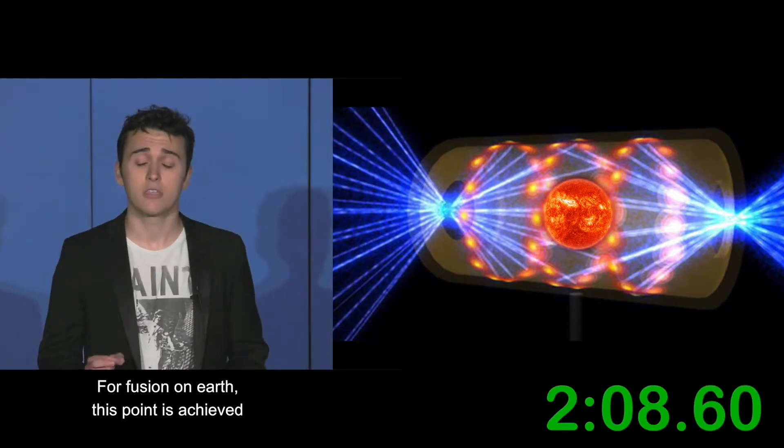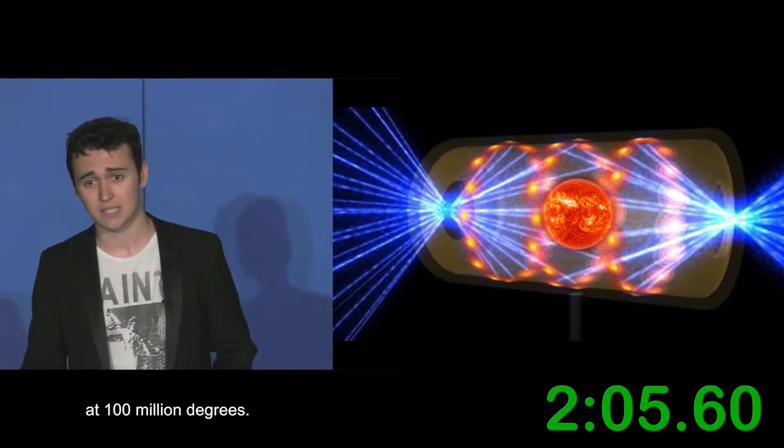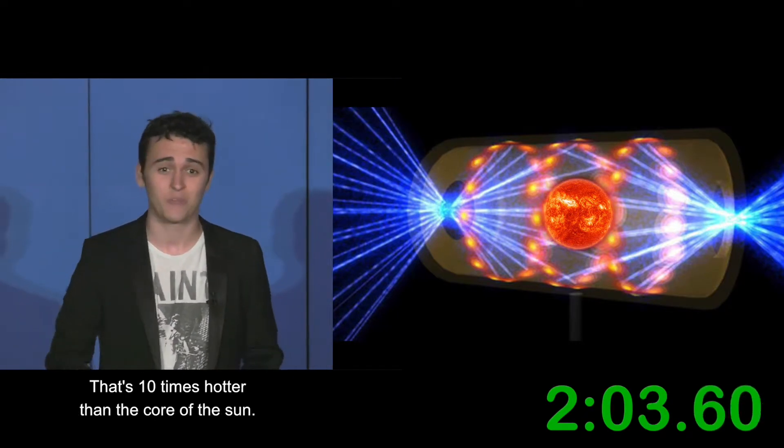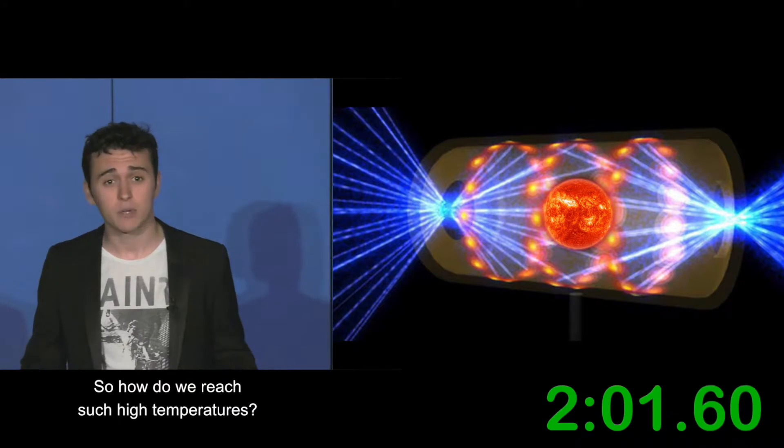For fusion on Earth, this point is achieved at 100 million degrees. That's ten times hotter than the core of the sun. So how do we reach such high temperatures?